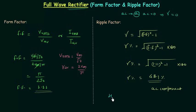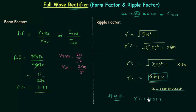In the case of the half wave rectifier, the ripple factor was equal to 121 percent. So we have reduced the percentage of AC component — in the full wave rectifier we have 48.1 percent, compared to 121 percent for the half wave rectifier. We have reduced the AC component by 73 percent using the full wave rectifier, which is definitely one of the biggest advantages of the full wave rectifier — we have better rectified output.